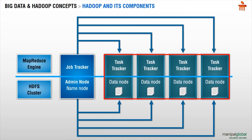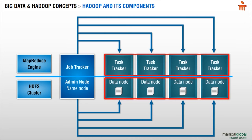The commodity machines are the machines which save the data you are trying to save on your distributed system. They always have two daemons running: one is the Data Node and the other is the Task Tracker. The Data Node takes care of the distributed file system aspect of the implementation, and the Task Tracker takes care of executing the MapReduce algorithm. The Data Node keeps interacting with the Name Node, and the Task Tracker keeps interacting with the Job Tracker.